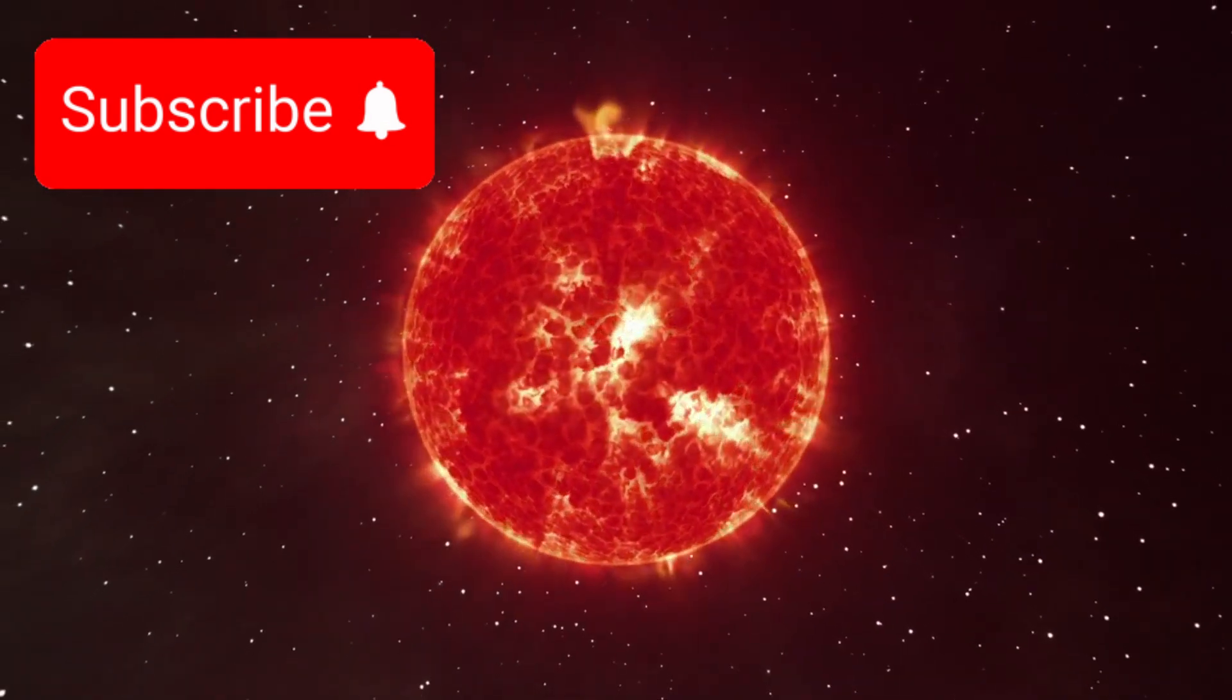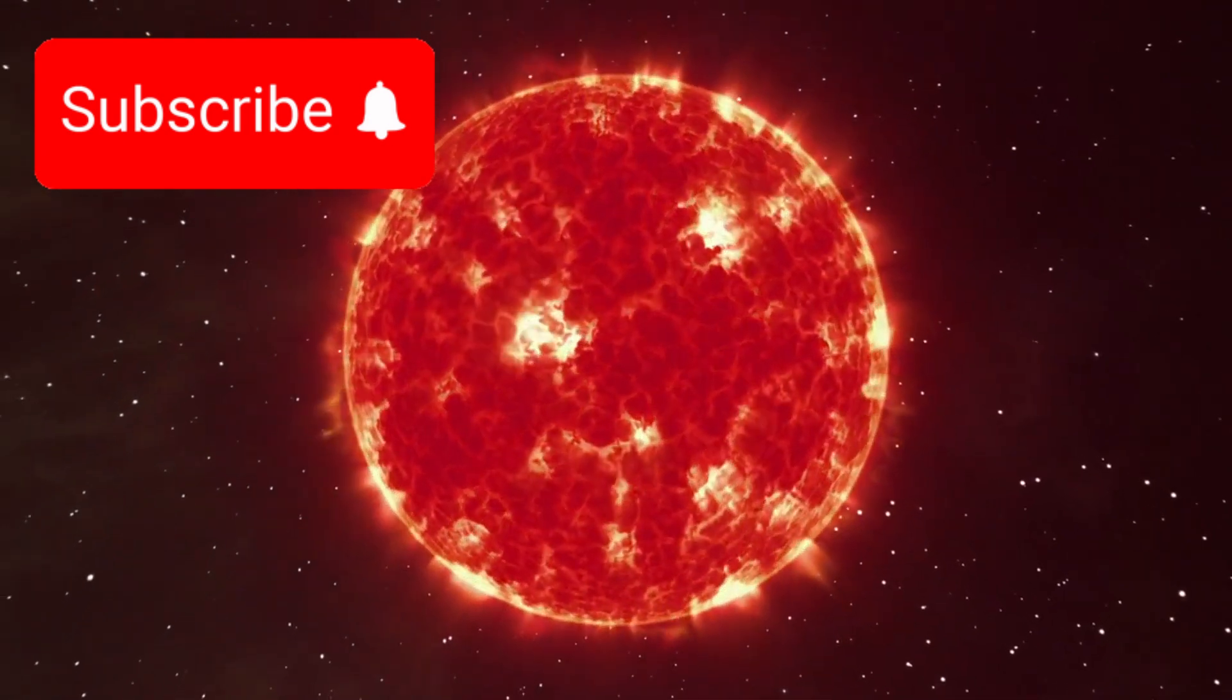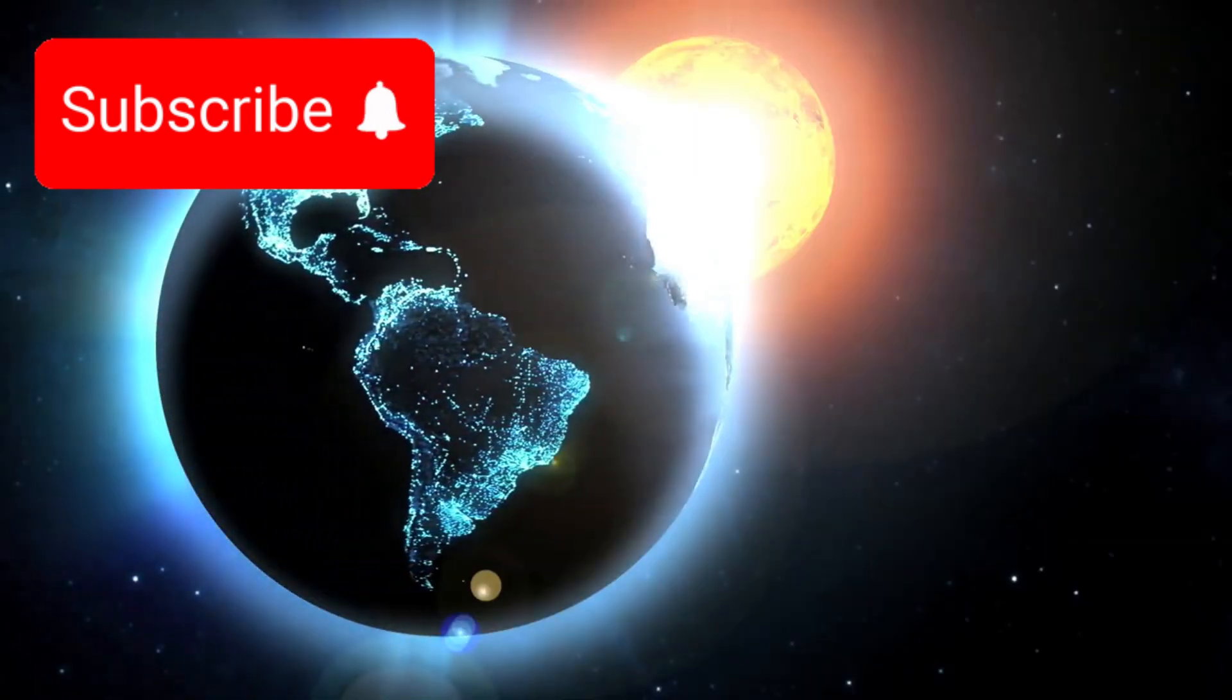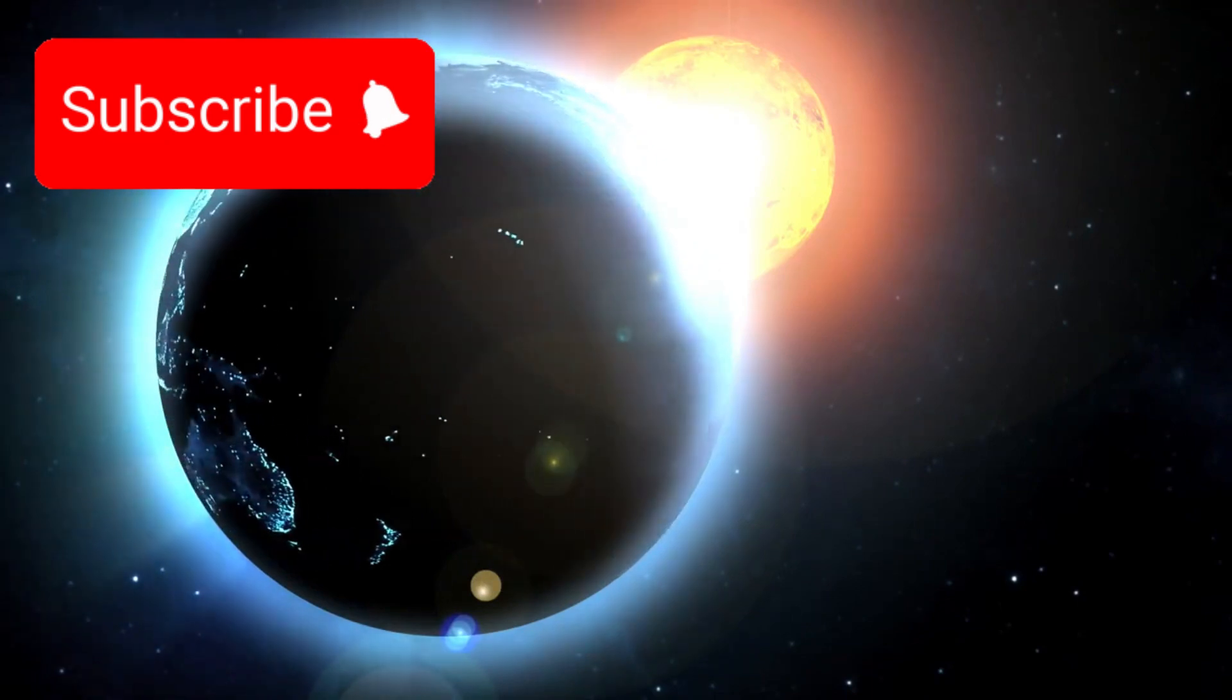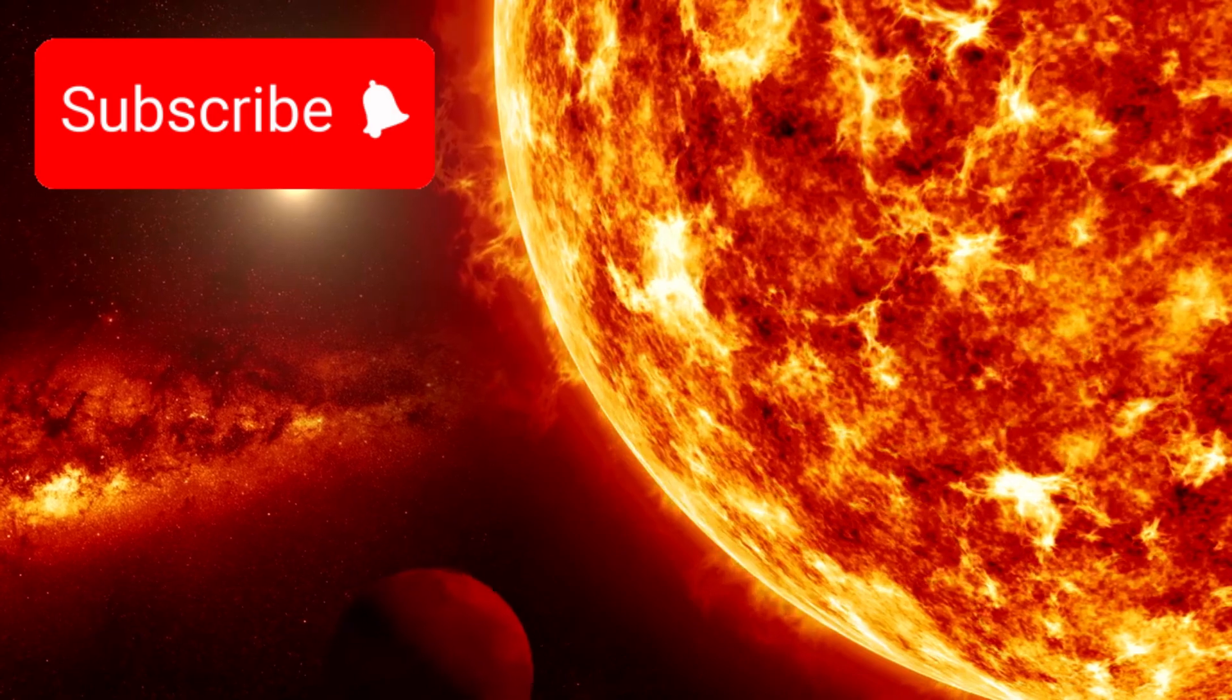Roughly 120 light-years from Earth, in the direction of the Leo constellation, a cold red dwarf star quietly burns. It's dim, small, and seemingly unremarkable, except for what it hides in orbit—a planet named K-218b.